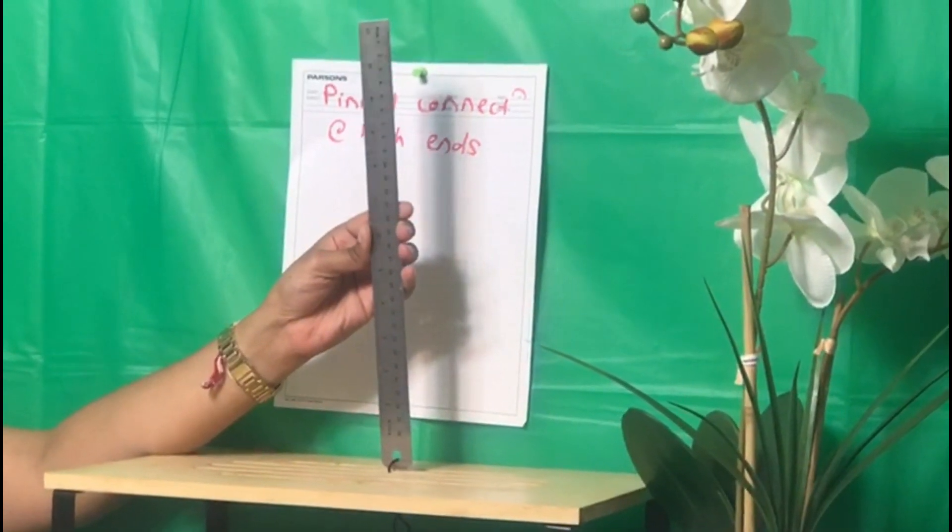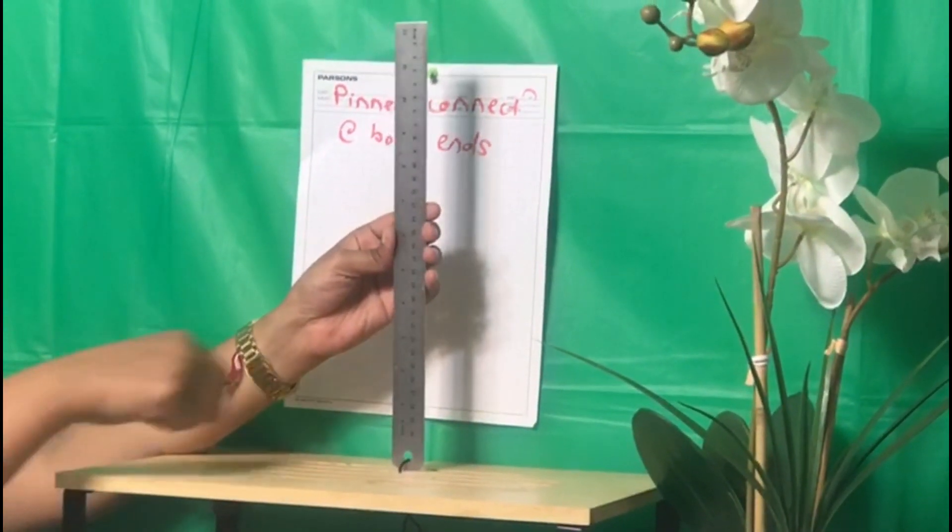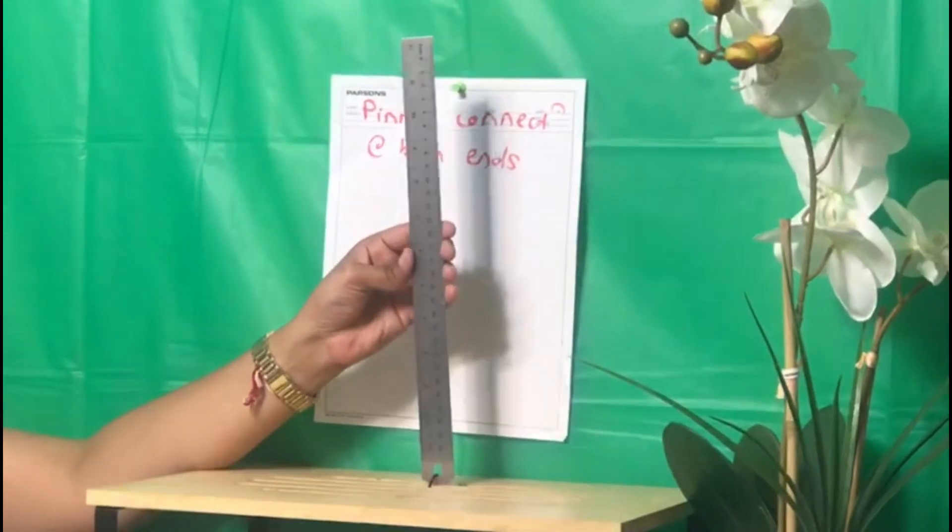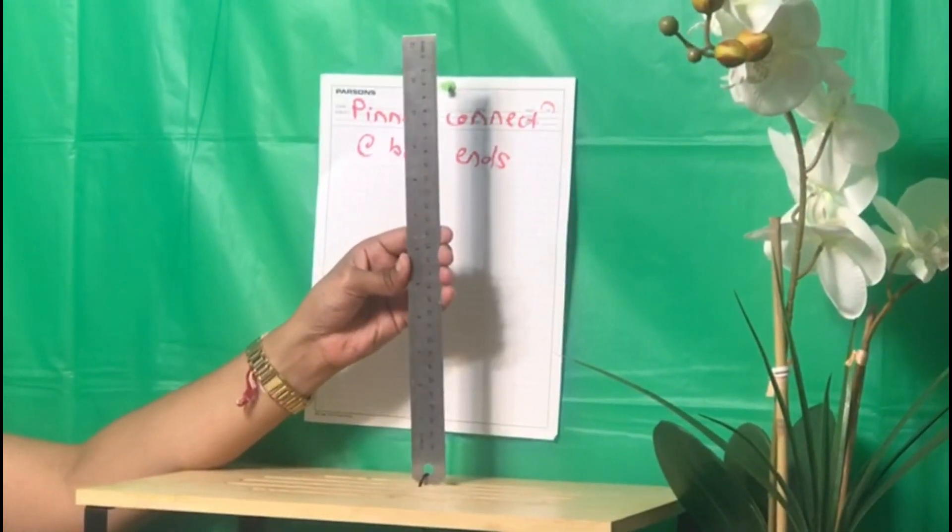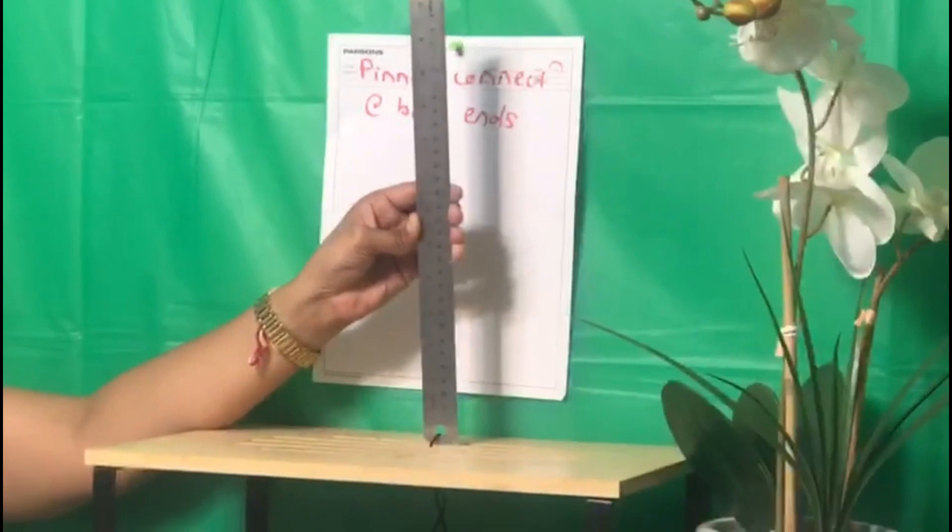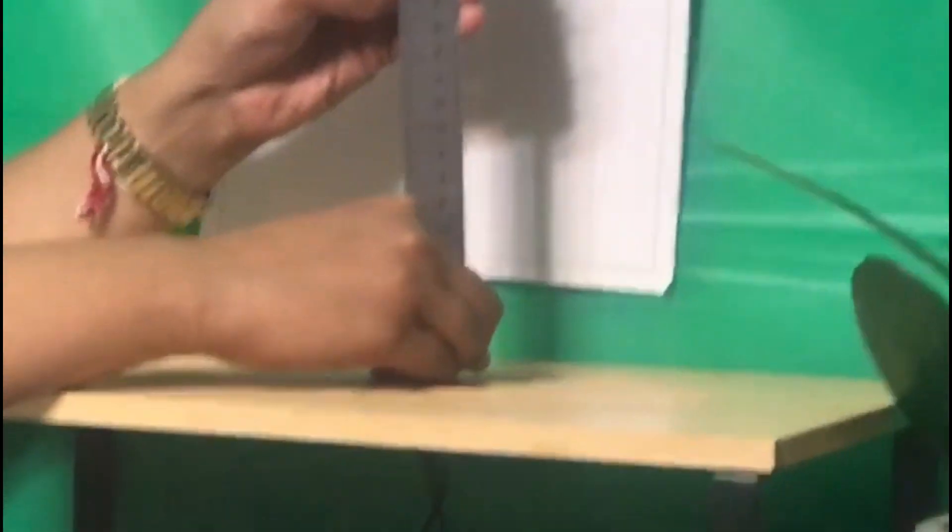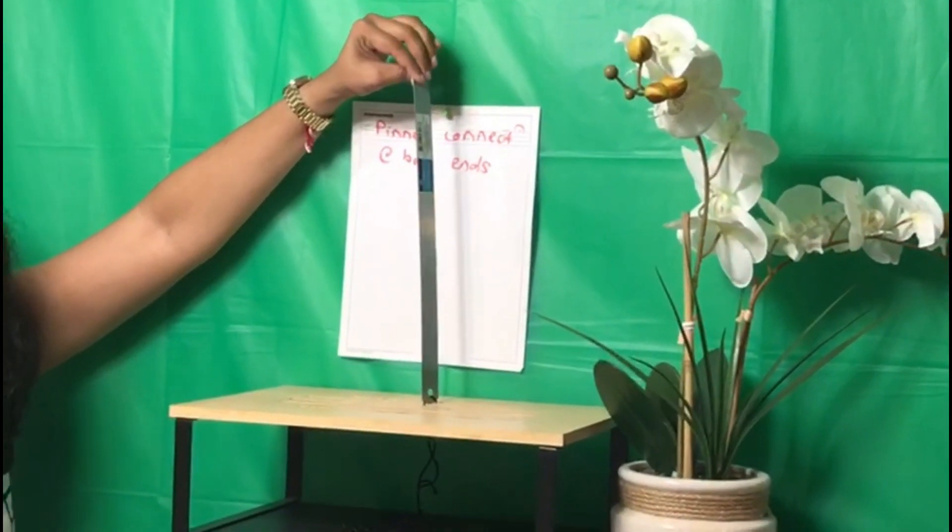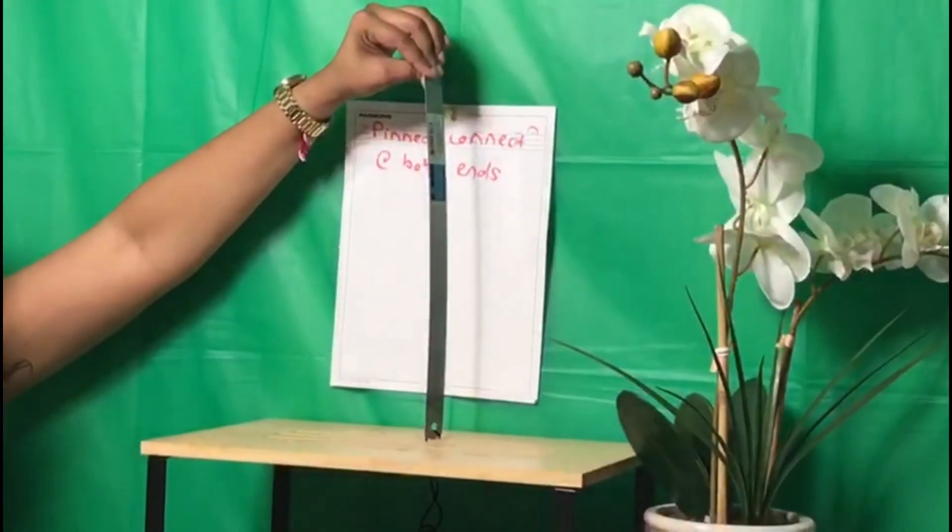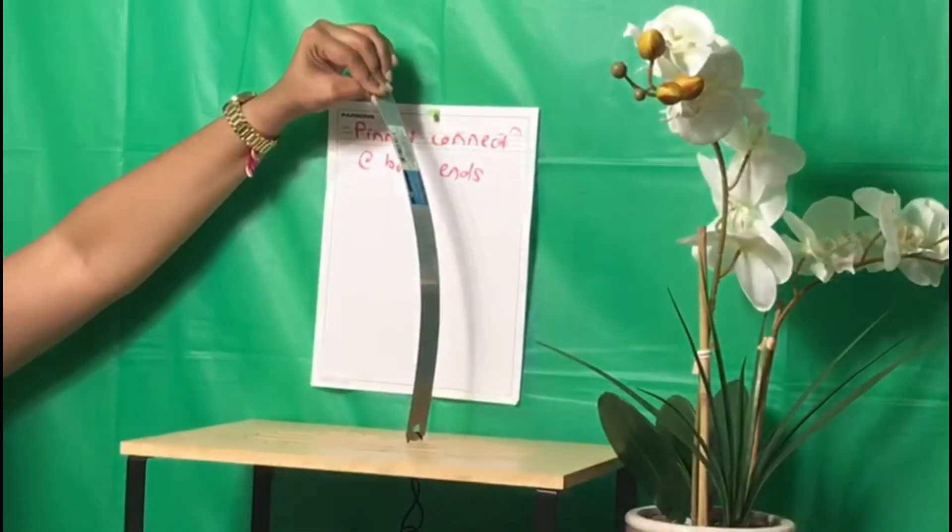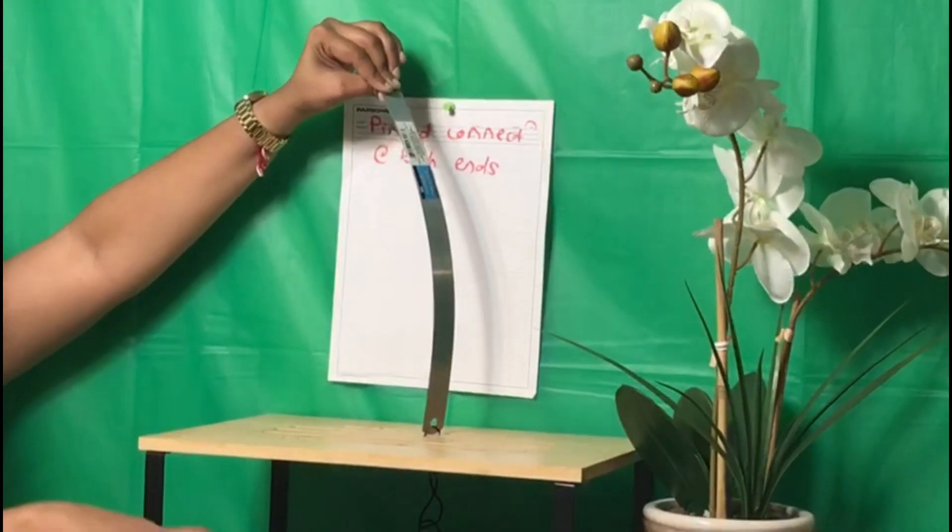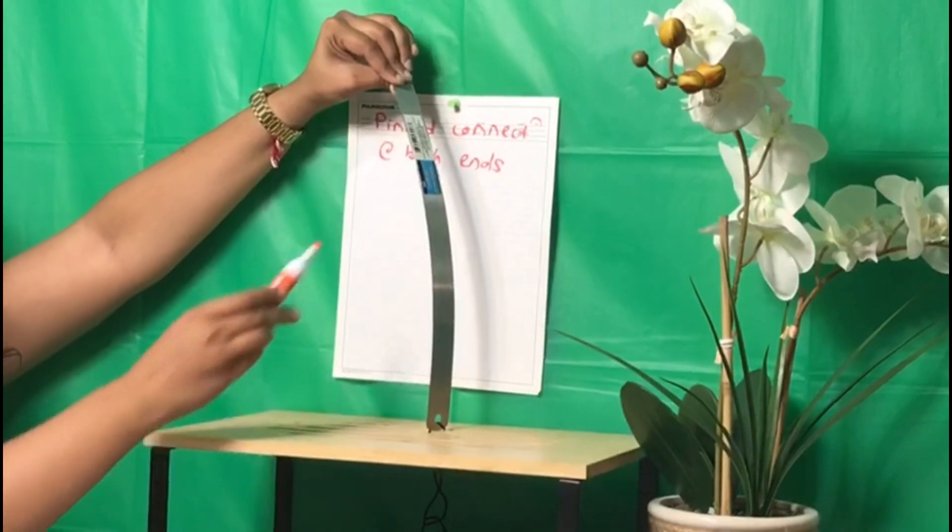So this is a pin connected collar. I have tied here with the help of rope, and so it can rotate but it cannot translate. So this is the pin connection. And I am holding here like this. So let's convert it like this and apply a load on that column. Can you see the shape of that buckling? We will just draw it on the paper.